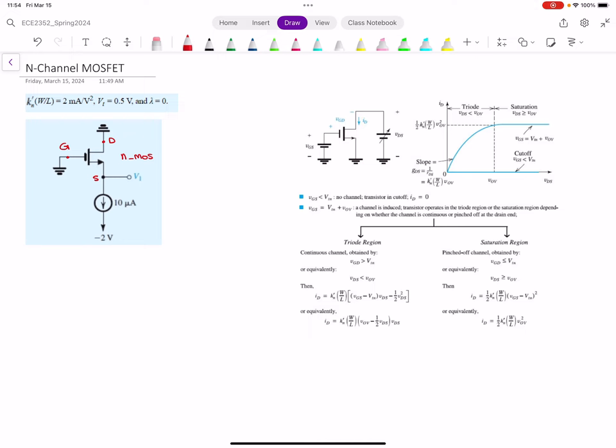They gave us some information. One is the MOSFET transconductance parameter, KN, which equals K'N times W over L, where W is the width and L is the length of the transistor. That is given as 2 milliamps per volt squared. The other information is the threshold voltage, and lambda equals 0.